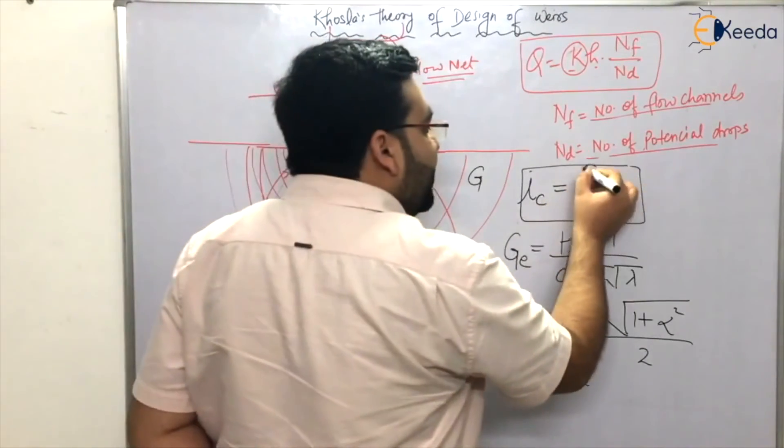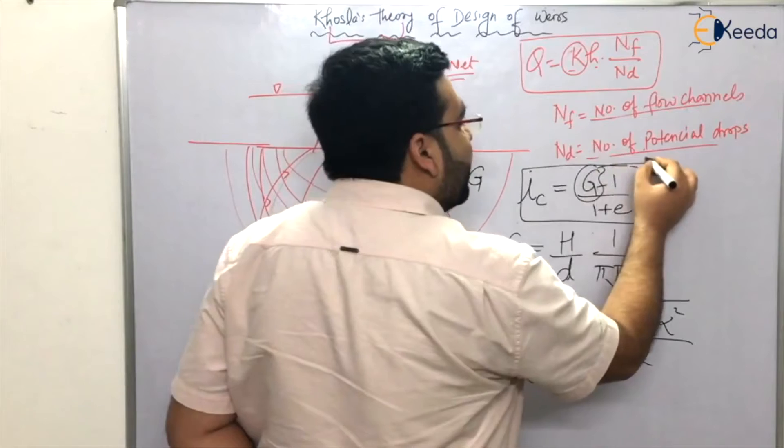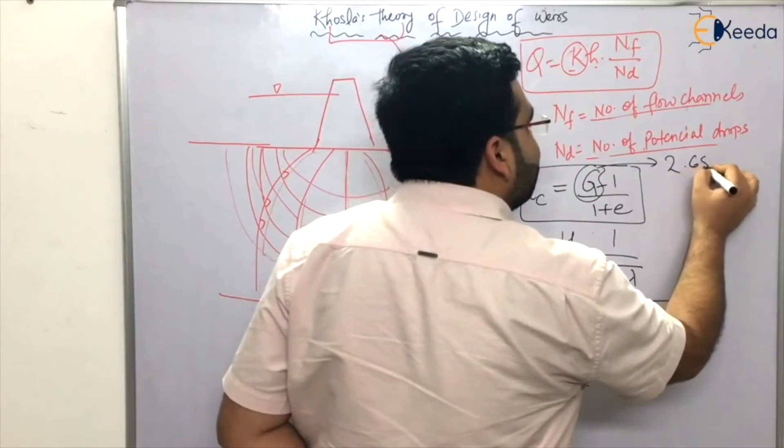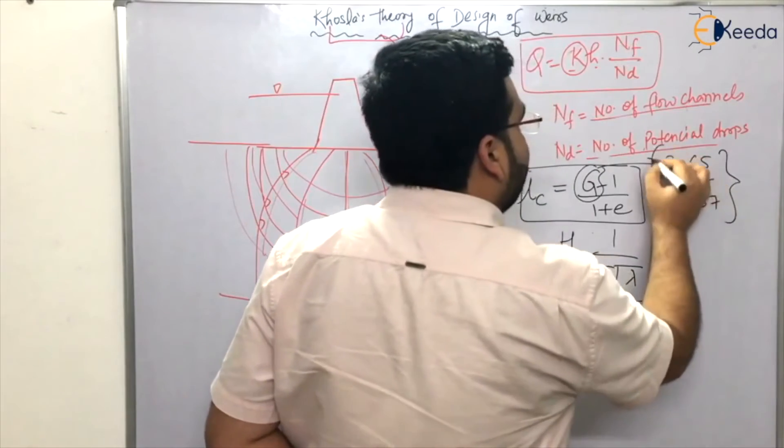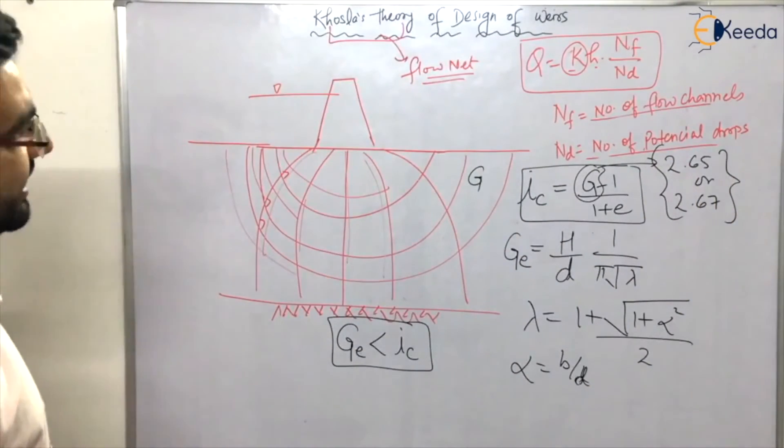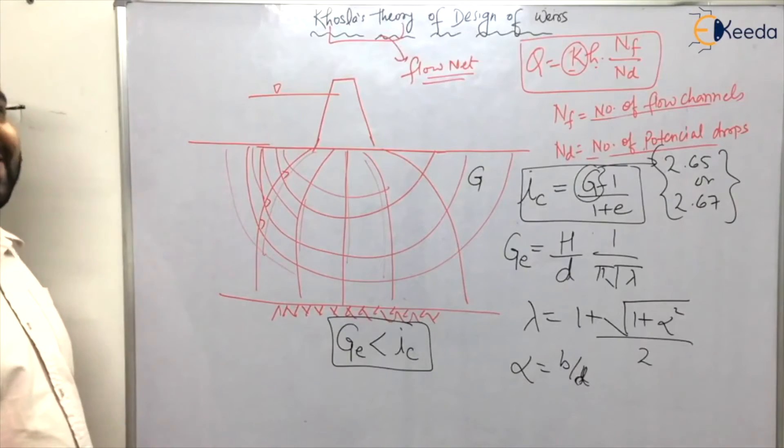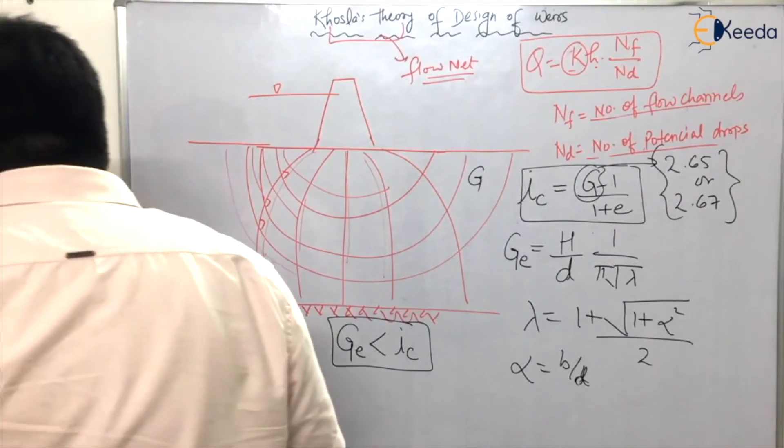Sometimes this G value is given in the question. If it's not given, you can either take 2.65 or 2.67. It depends on you - in some books it's taken as 2.65, in some books as 2.67.